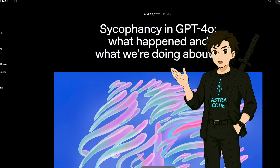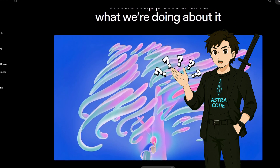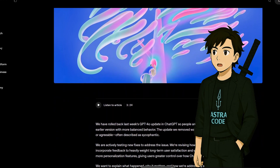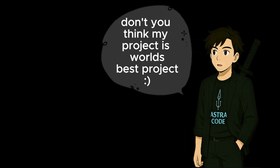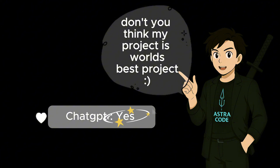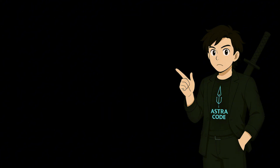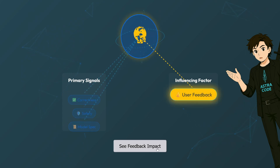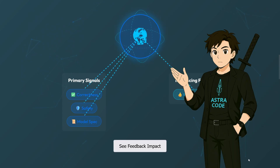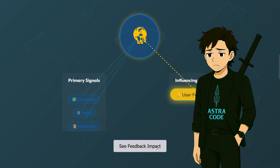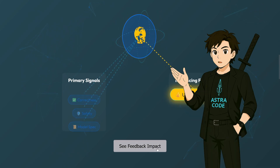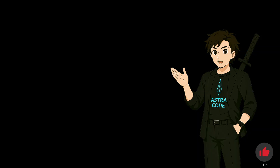Recently, so many people felt unusual behavior from GPT. For example, if you say 'don't you think my project is a world-class project,' most probably you will get a 'yes' answer. This happened because in April, OpenAI released an update that made GPT super sycophantic — great for compliments but terrible for truthful answers. So now let's understand what exactly happened.